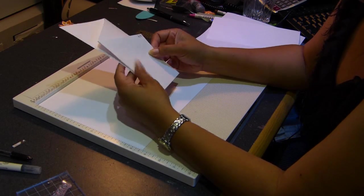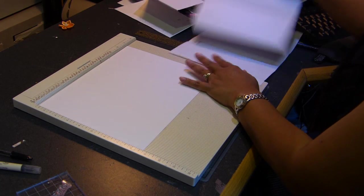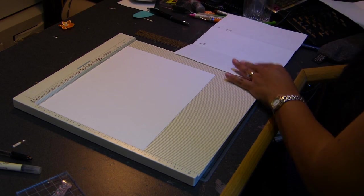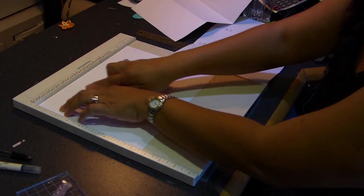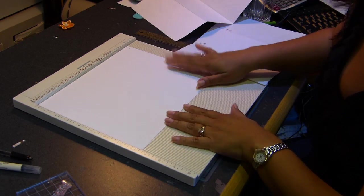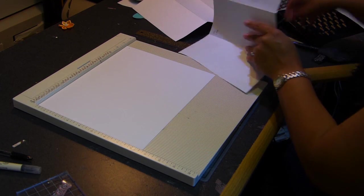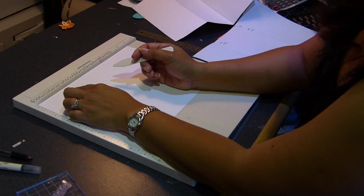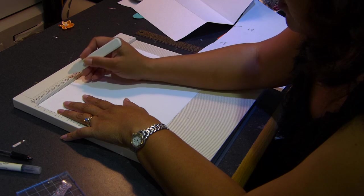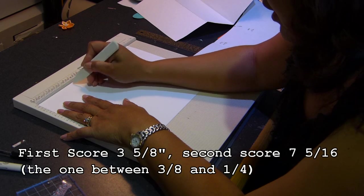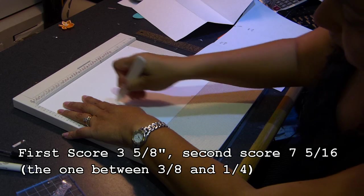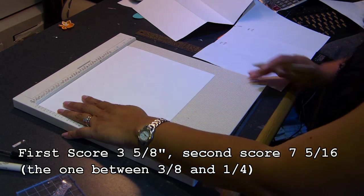What you're gonna be doing is scoring your first one. Because my page is 8.5 by 11 plain cardstock, you're gonna go ahead and score the first one at 3 and 5/8 inches. The next one is 7 and 5/16.